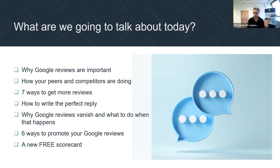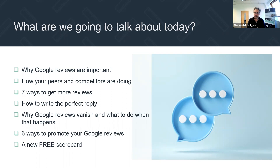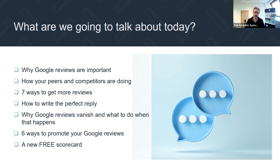We'll look at how your peers and competitors are doing. Seven ways to get more reviews, trying to get around the issue of having to have a Google account. Why we should be writing a reply and how to write the perfect reply. Why Google reviews vanish — it is incredibly annoying when you've worked very hard to get a Google review and then it vanishes. We'll finish off by talking about ways to promote your Google reviews and we've got a free scorecard to help you nail down where you're doing well and where you're weaker.